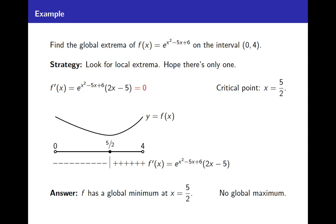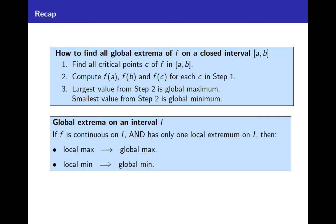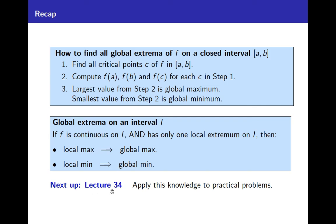Keep this in mind — you'll have opportunity to use this technique in the future. That's it for today. A quick recap: we know how to find all the global extrema of a function on a closed interval. For an interval that's not closed, if f is continuous and there's only one local extremum, then if it's a local max it's a global max, and if it's a local min it's a global min. Get some practice with this — coming up in Lecture 34 we're going to apply this knowledge to practical problems. I'll see you then. Goodbye.